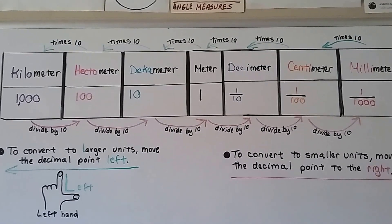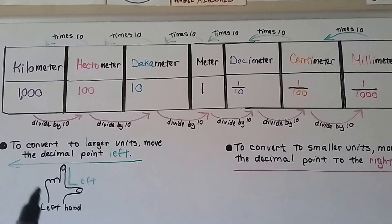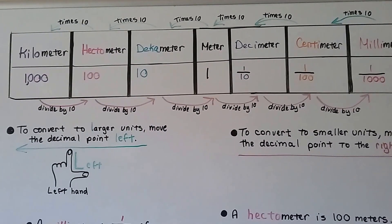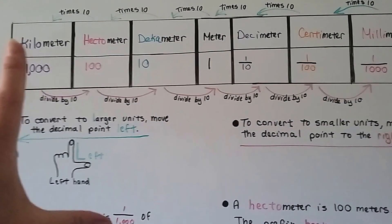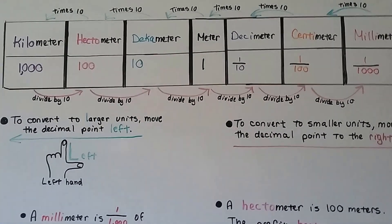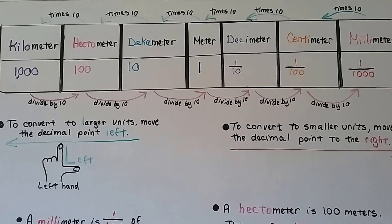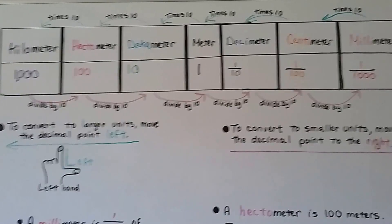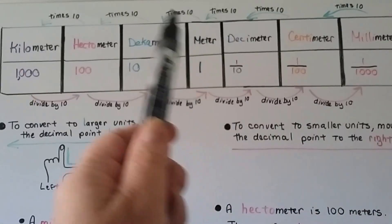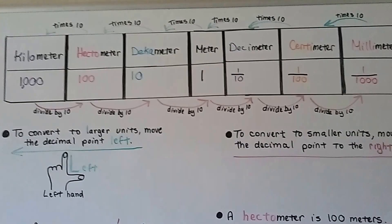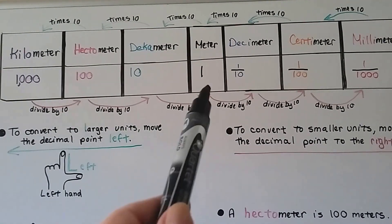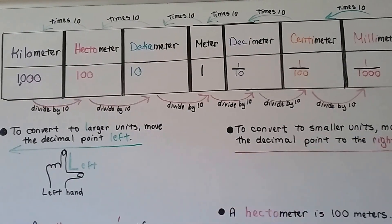When you want to convert to larger units, you move the decimal point to the left. Larger starts with an L, and so does left — it makes an L. When you want to convert to smaller units, you move the decimal point to the right. When going larger you're multiplying by 10 to get to the next larger unit, and when going smaller you're dividing by 10 to get to the next smaller unit.